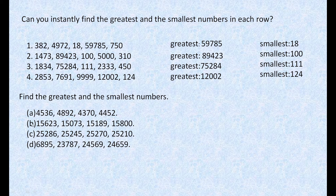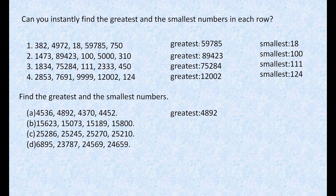The highest place here is the 1000s place, and all numbers have 4 there. So we compare the 100s place. The 100s place has 5, then 8, then 3, then 4 for the respective numbers. We know that 8 is the greatest, so the greatest number is 4892. To find the smallest, 3 is the smallest compared to the other digits, so the smallest number is 4370.